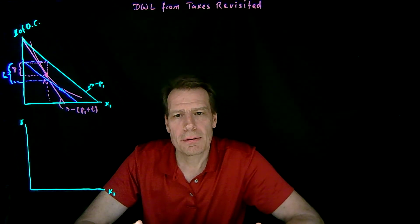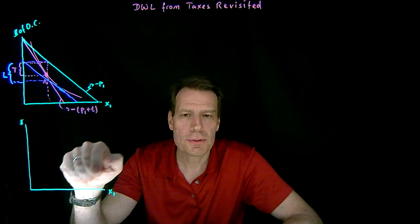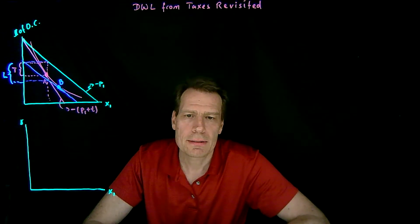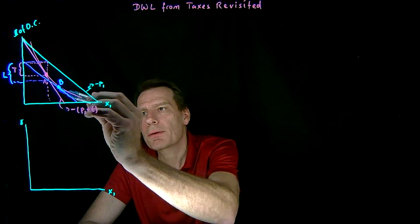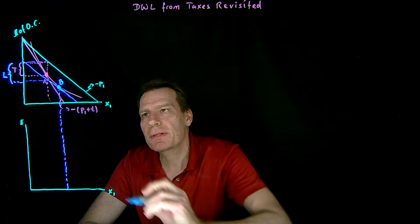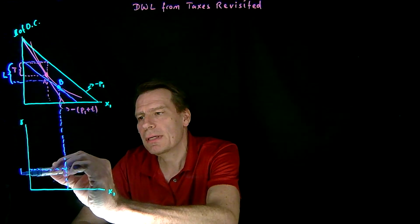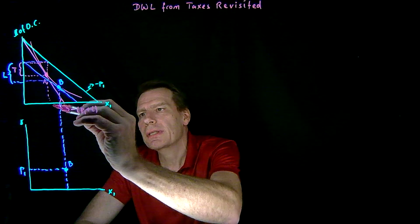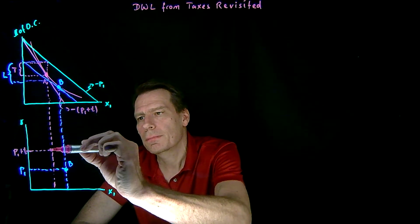Now that we know about compensated demand curves, or marginal willingness to pay curves, we can derive what that deadweight loss looks like in a marginal willingness to pay graph. We have two points — point A and point B reached with the lump sum tax — both tangent to the same indifference curve. We derive marginal willingness to pay curves from a single indifference curve, so we can bring down point B. Point B happens on the shallower budget, the budget with the price that doesn't include the tax, so it happens at p1. Point A happens on the steeper budget that includes the tax, so at the higher price p1 plus T.